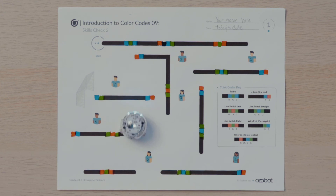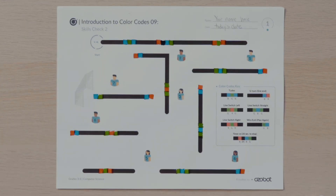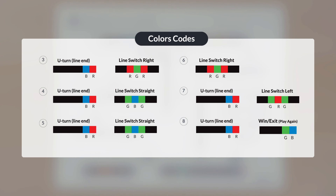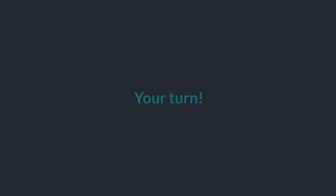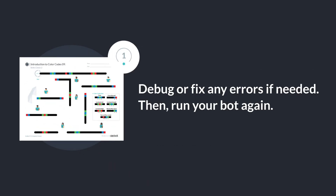Did your bot move to the lines in the correct sequence? Did your bot make it to the goal and shoot before the 30-second timer was up? If not, check your color codes. Line 3 should have a U-turn and a line switch right. Lines 4 and 5 should have a U-turn and a line switch straight. Line 6 should have a line switch right. Line 7 should have a U-turn and line switch left. Line 8 should have a U-turn and a win exit play again. Check your activity sheet with the correct missing color codes, debug or fix any errors if needed, then run your bot again.